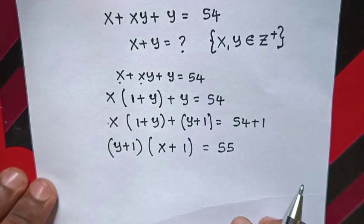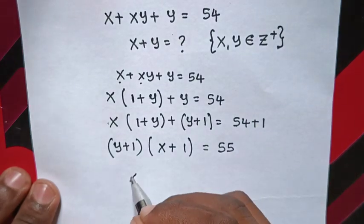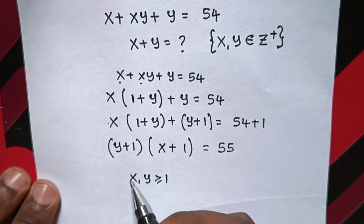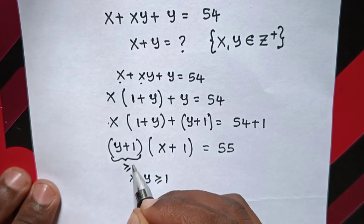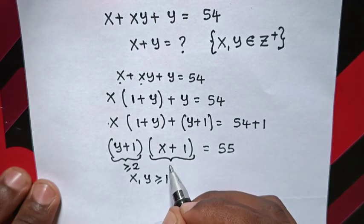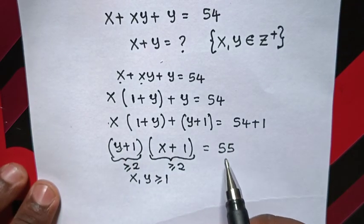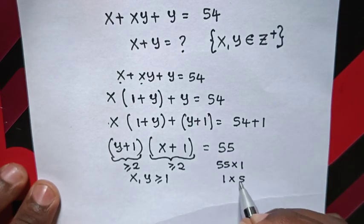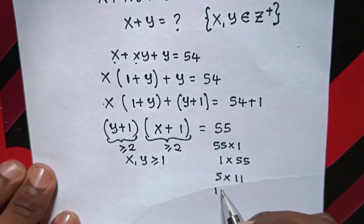Now, recall x and y are elements of positive integers. Therefore x and y should be greater than or equal to 1. So from y greater than or equal to 1, (y plus 1) will be greater than or equal to 2, because 1 plus 1 is 2. And x is greater than or equal to 1, so (x plus 1) is also greater than or equal to 2. From the multiplication of these two factors equaling 55: the factor pairs are 55 times 1, 1 times 55, 5 times 11, or 11 times 5.